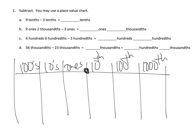Generally I made them fill out the place value chart themselves. Let's do problem C. C says four hundreds and six hundredths. This is really cool because it helps kids understand what the place value is. So I'm going to get my thick pen and say: four hundredths — that's one, two, three, four — and then six hundredths is way back here: one, two, three, four, five, six. So there's my four hundredths and six hundredths.